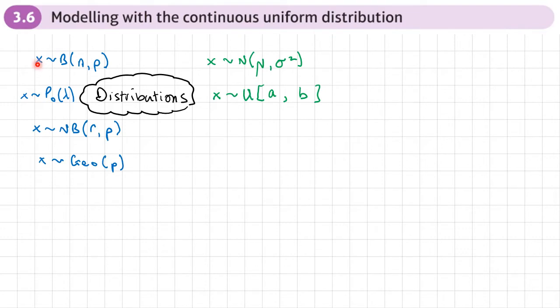So now might be a point to actually look at all the distributions that you've learned so far. You've got the Normal Distribution, Poisson Distribution, Negative Binomial and Geometrics. All of these ones in blue are examples of discrete distributions.